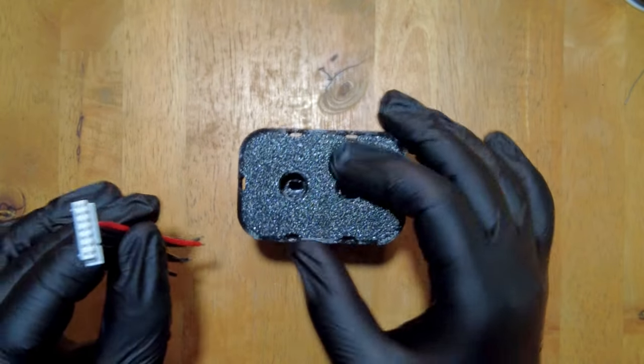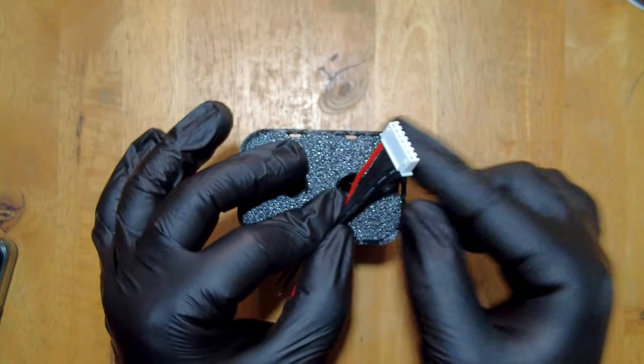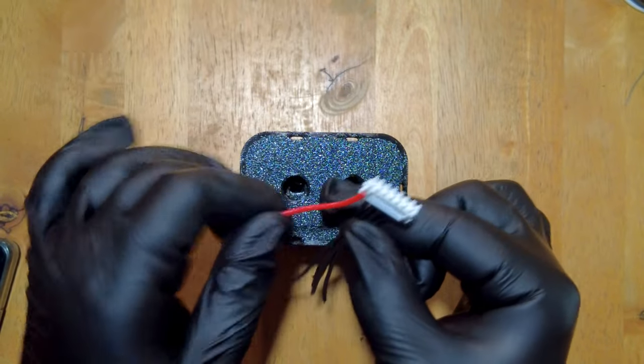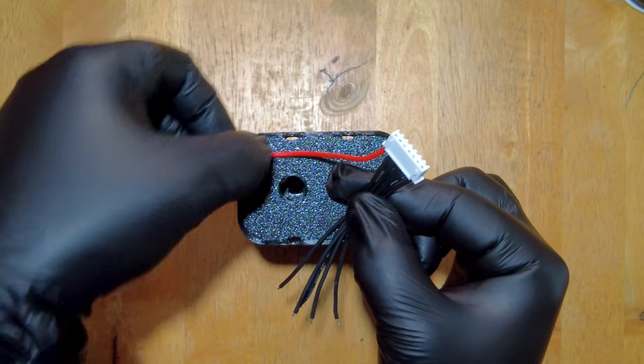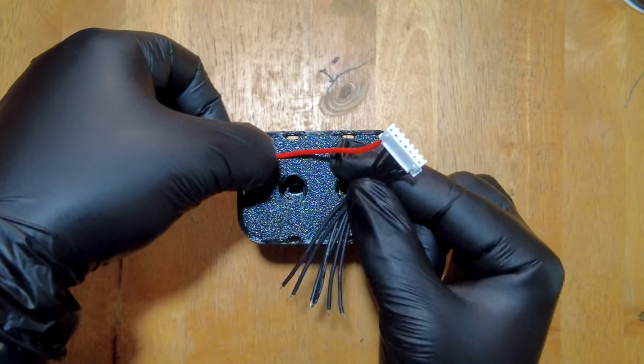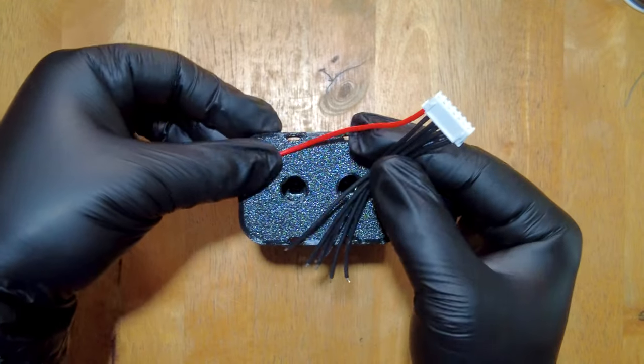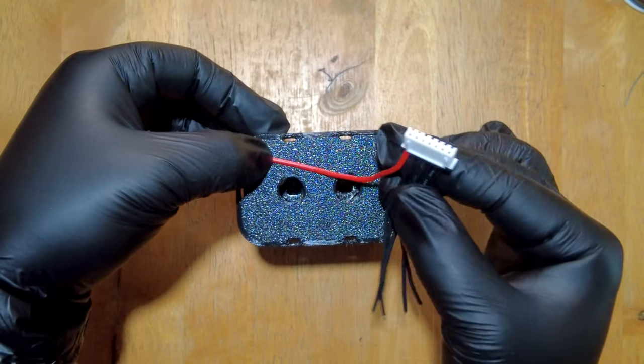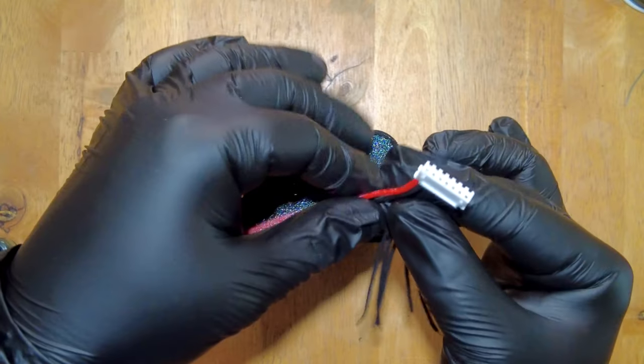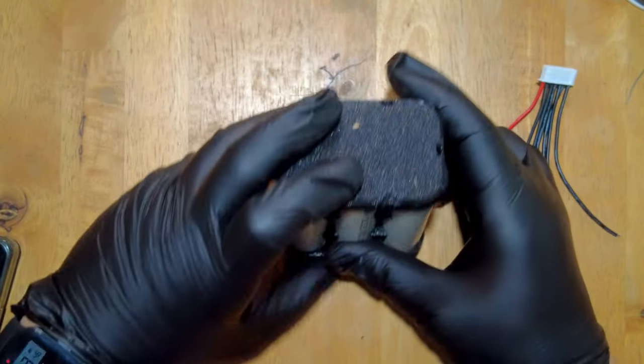So normally I would want my balance connector to be at least an inch away from the whole battery pack. But if I'm going to be doing it like that, the red wire which goes to the positive one just barely reaches.